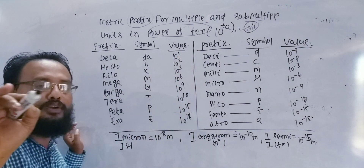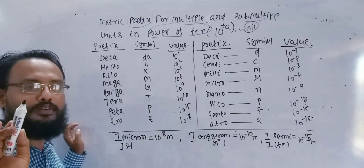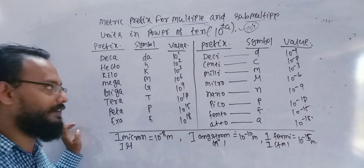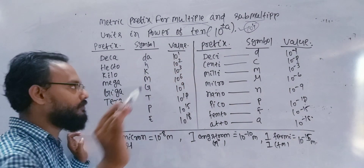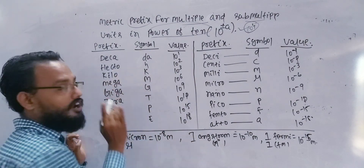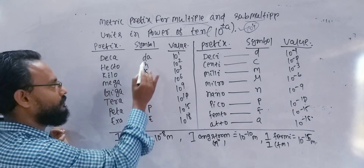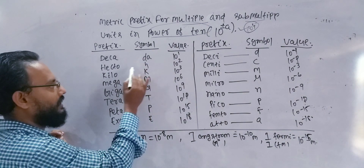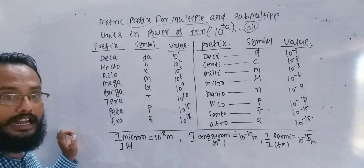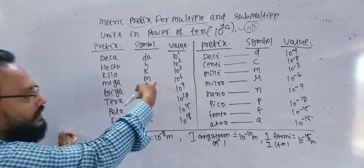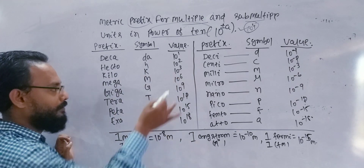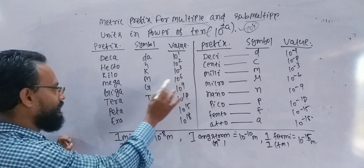2.4 into 10 to the power of 1 meter is 2.4 decameter — the greater level gives us 10 to the power of 1 meter. Same 10 to the power of 1. Kilo is 10 to the power 3. Then that is 6, so 10 to the power 6 is mega.